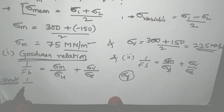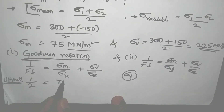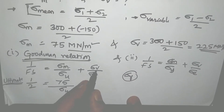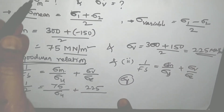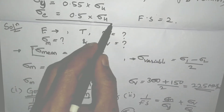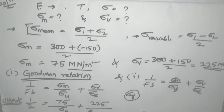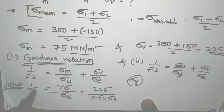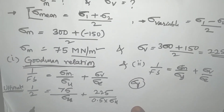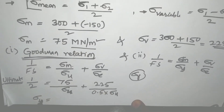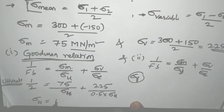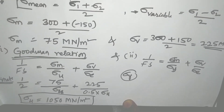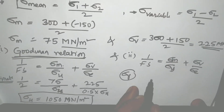Substituting values into the Goodman equation: one divided by two equals 75 divided by Sigma_U plus 225 divided by Sigma_E. Since Sigma_E equals 0.5 times Sigma_U, I substitute 0.5 into Sigma_U. There is only one unknown, Sigma_U. Solving mathematically by taking common factors gives Sigma_U equal to 1050 mega Newton per meter square.